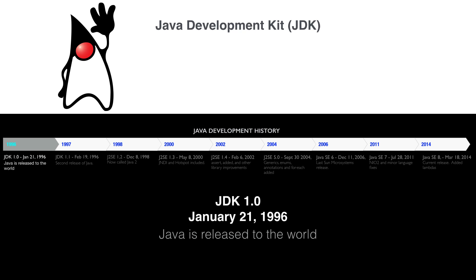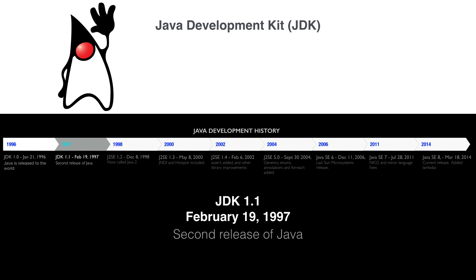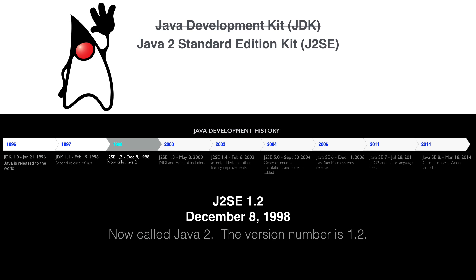Time for a quick history lesson. Java has been around for a very long time. It was released in 1996, and it was originally called the Java Development Kit, at least for the first two versions. I've been using it since 1998 when Java 1.2 came out. And that's where it gets weird: 1.2 equals 2. That is, Java 1.2 and Java 2 are the same thing. I think it was a marketing thing, but from that point forward in Java history, Java incremented by whole numbers.